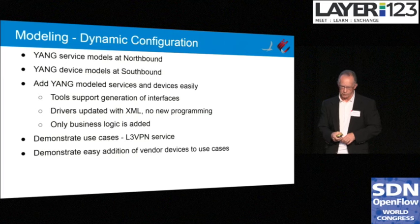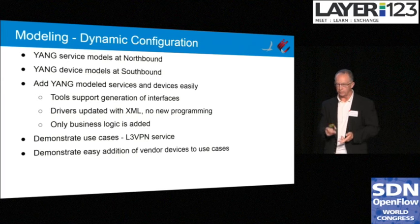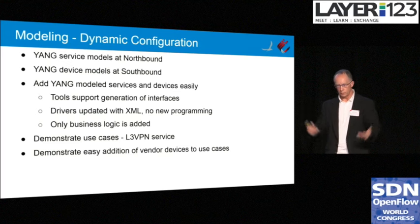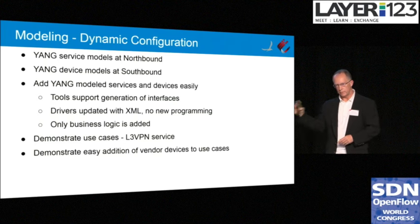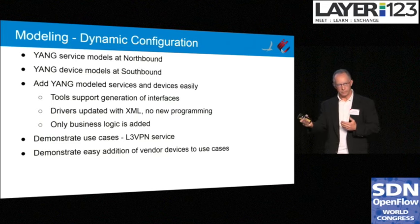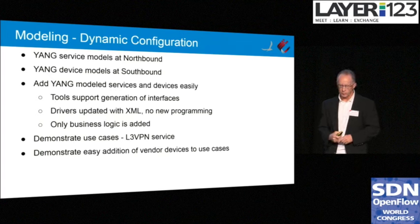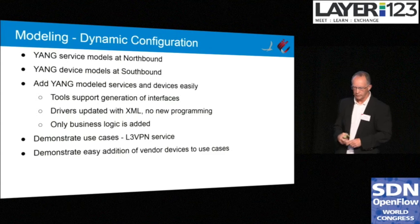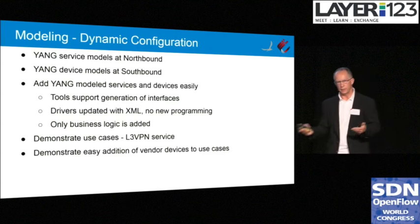On modeling and dynamic configuration: we have Yang service models at northbound and Yang device models at southbound, along with a tool chain — much of this brought in through tremendous support from Huawei and additional community companies. A very good tool chain allows drivers to be updated without having to recompile and reload drivers. The goal is that you can just bring your device with a standard model and quickly add it with some business logic. One of the first use case examples will be an L3 VPN service, with vendors demonstrating how they add their devices.